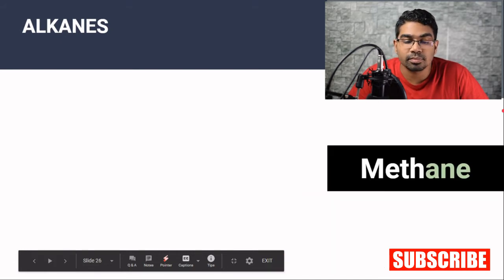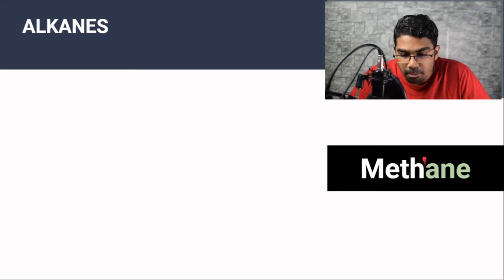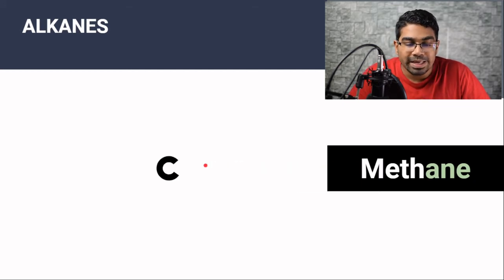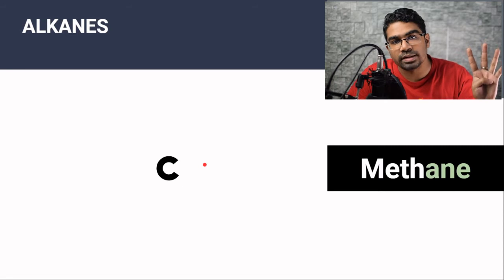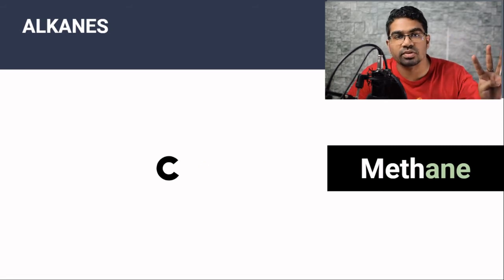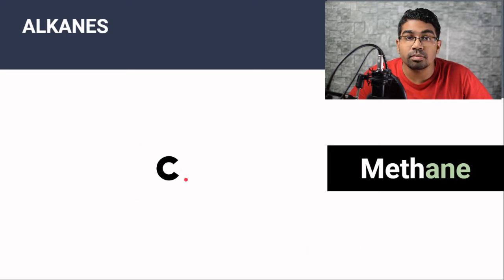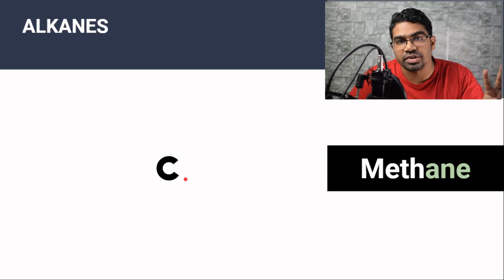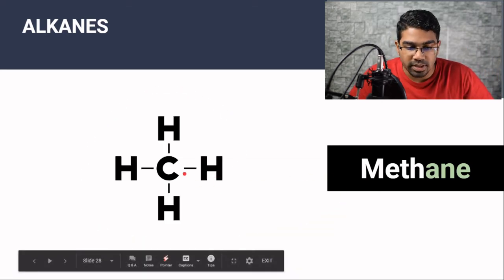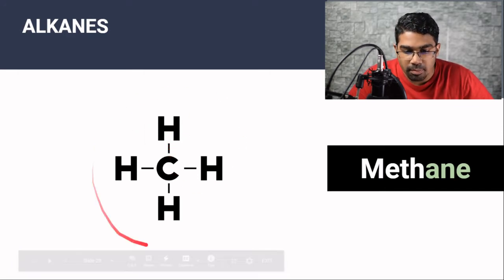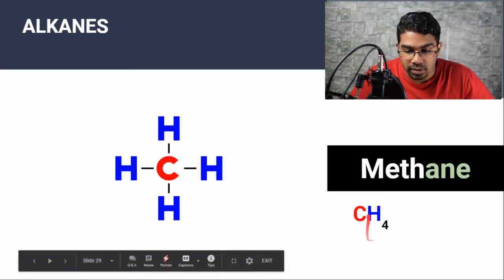Let's look at an example: methane. From earlier we know the prefix meth is for one carbon, so methane contains only one carbon. Each carbon atom can be bonded to four other atoms, so each carbon must have four bonds. Since alkanes are hydrocarbons, the only other atom present is hydrogen. Therefore this carbon forms four bonds with four hydrogen atoms. The molecular formula for methane is CH4 — one carbon and four hydrogens.